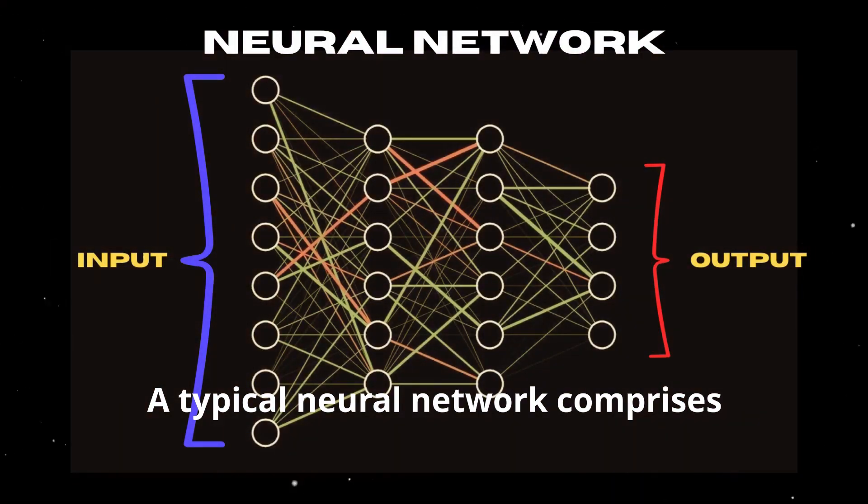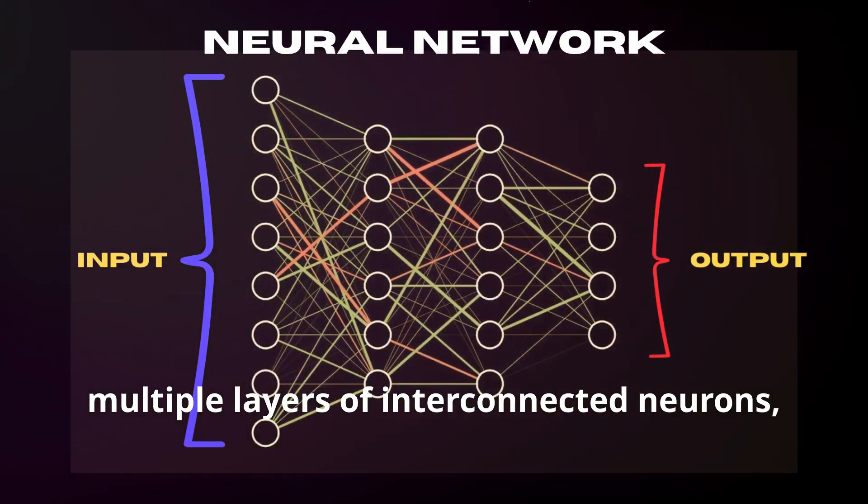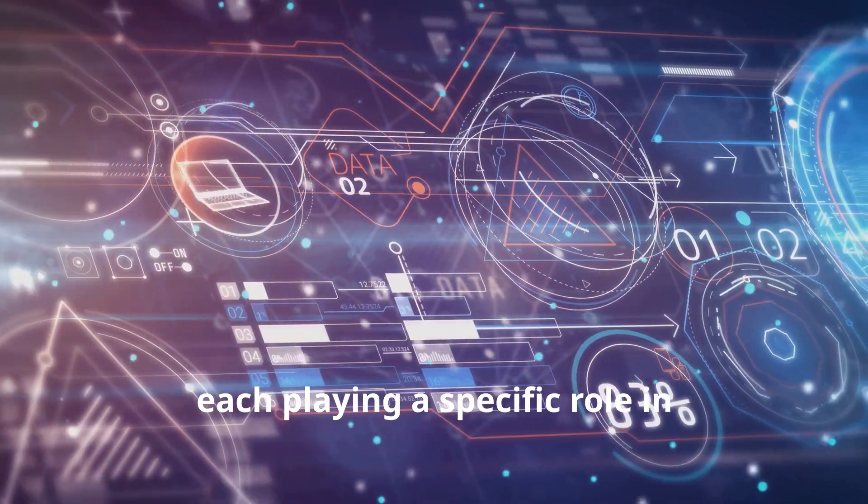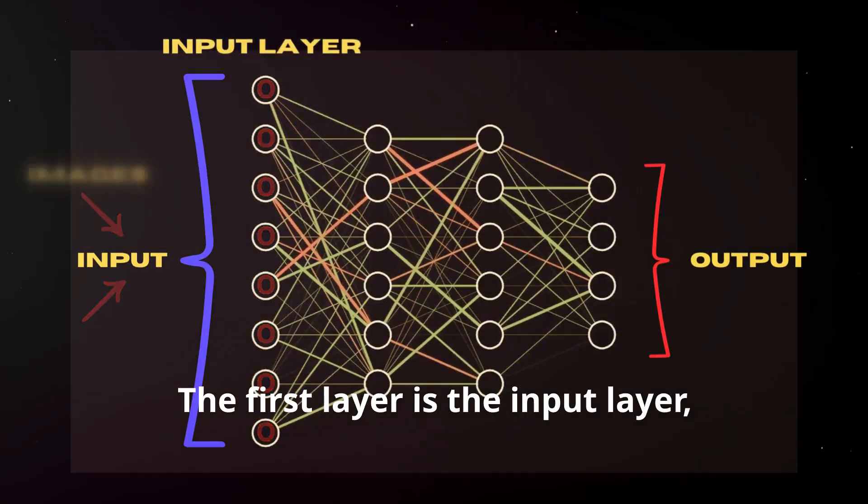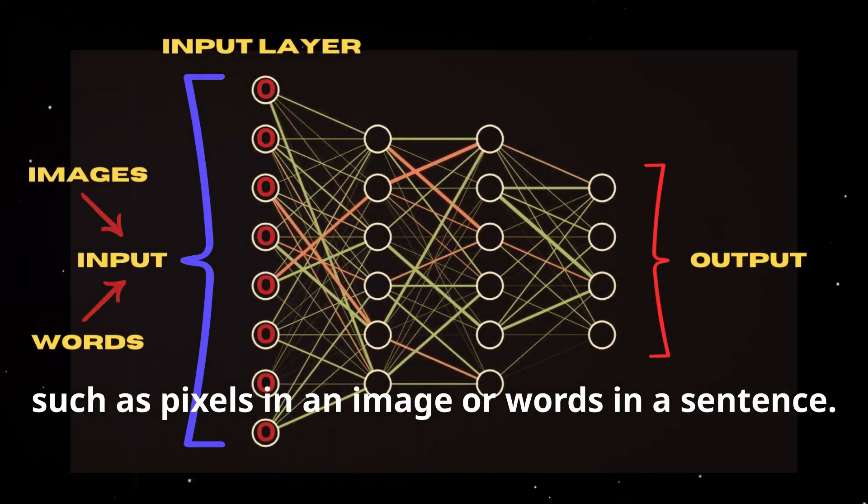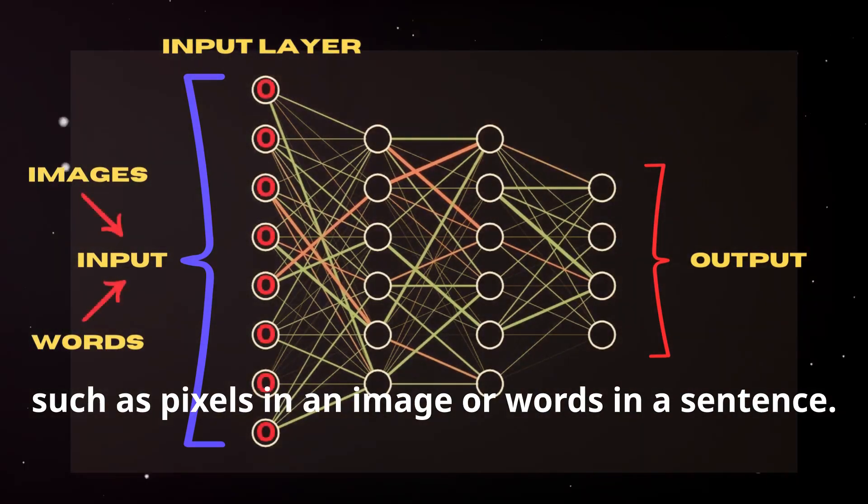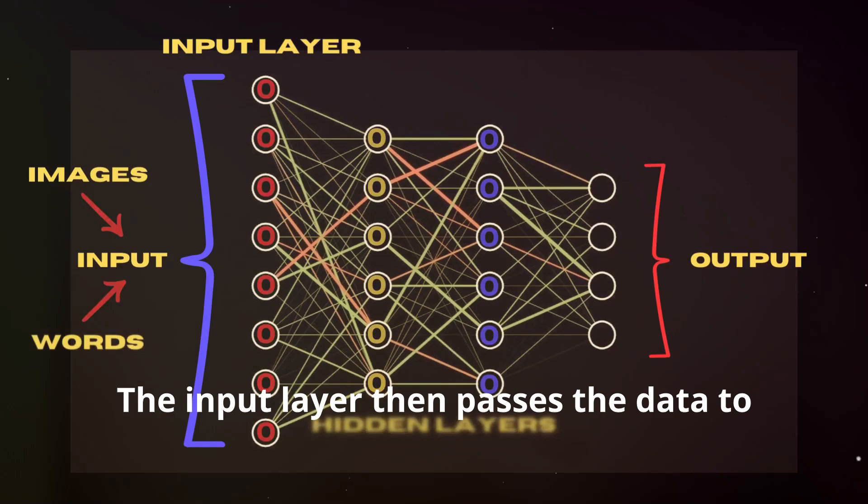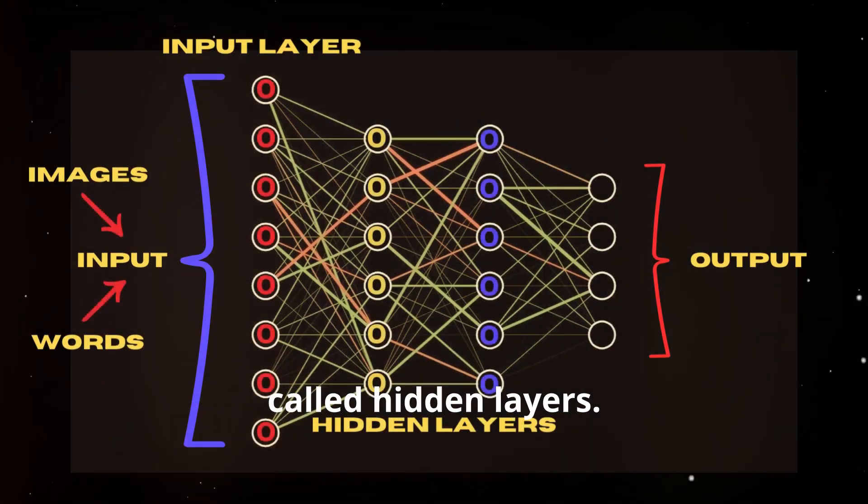A typical neural network comprises multiple layers of interconnected neurons, each playing a specific role in processing information. The first layer is the input layer, responsible for receiving the raw data such as pixels in an image or words in a sentence. The input layer then passes the data to subsequent layers, called hidden layers.